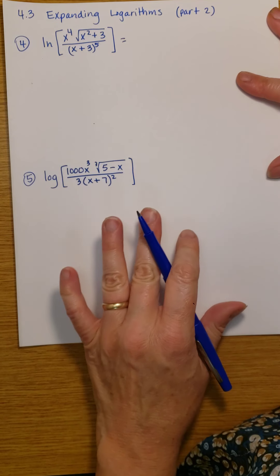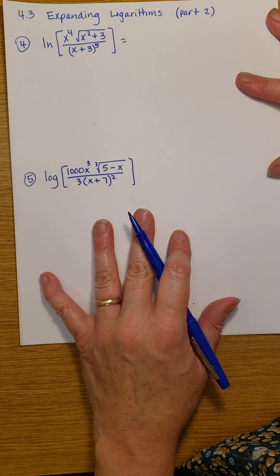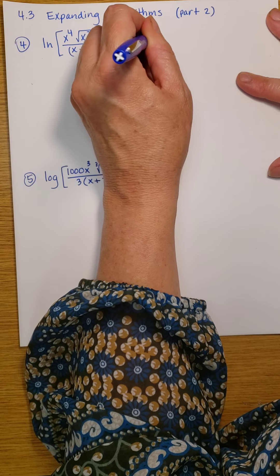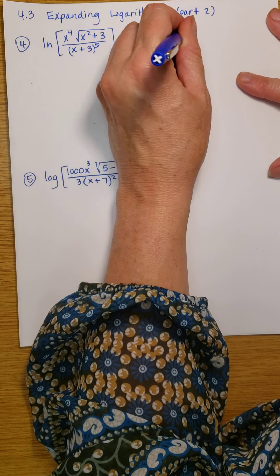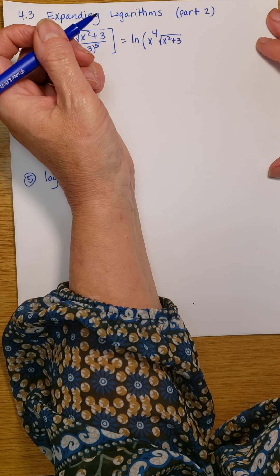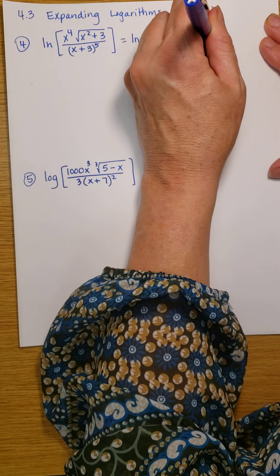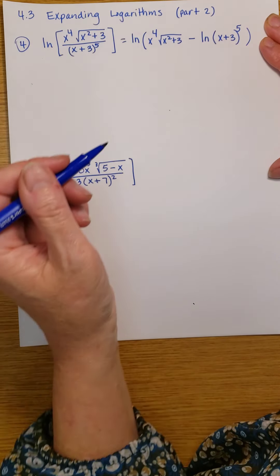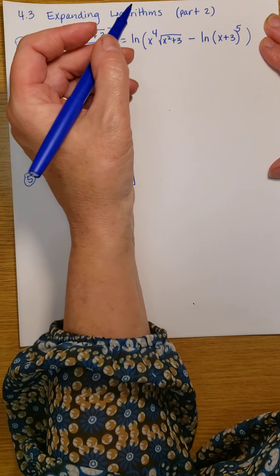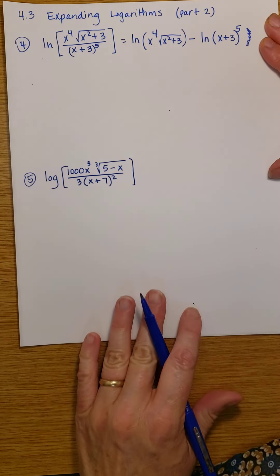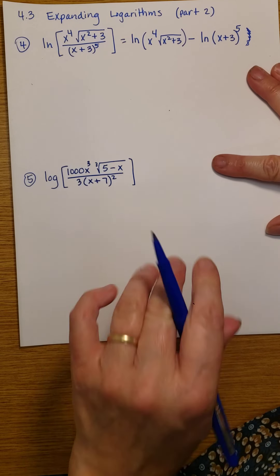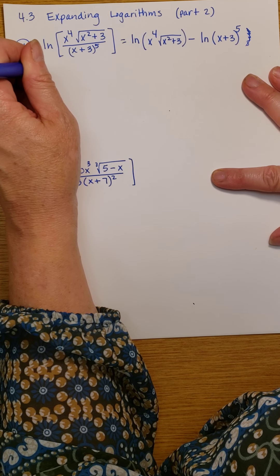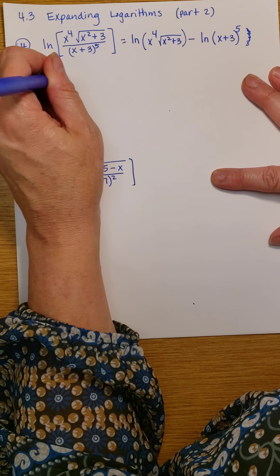I'm going to start by taking the fact that we have a quotient, and that's going to be the difference of the logs. So I have the natural log of the numerator, which is the natural log of x to the 4th times the square root of x squared plus 3, minus the natural log of the quantity x plus 3 to the 5th power. I'm going to expand the numerator as a sum using the law of logs — the natural log of the first part of my product, which is x to the 4th.